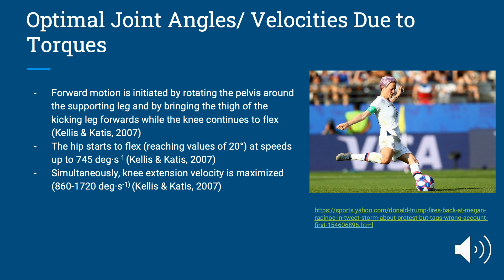The hip starts to flex, reaching values of 20 degrees at speeds of up to 745 degrees per second. As it's flexing, the knee simultaneously starts to extend, and that velocity is maximized at about 860 to 1,720 degrees per second.